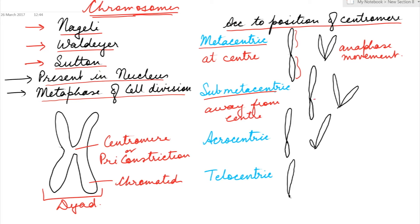This divides the chromatid into two unequal arms. During anaphase movement, L-shaped chromosomes can be seen. Acrocentric means the centromere is slightly away from tip, forming two unequal arms. During anaphase movement, J-shaped chromosomes can be seen. Telocentric means the centromere is at the tip.